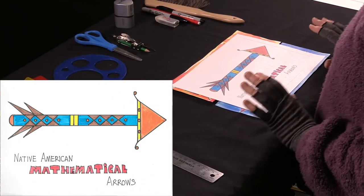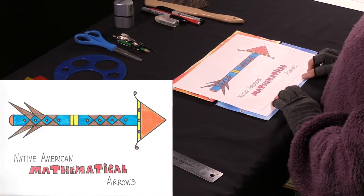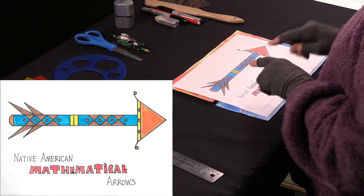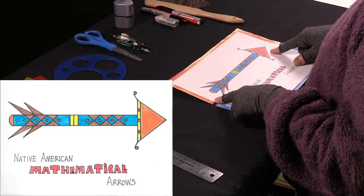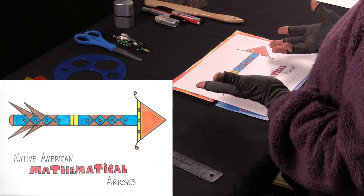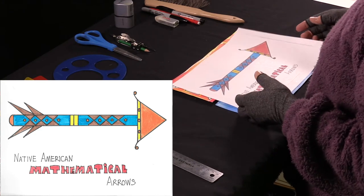This lesson is called Native American Mathematical Arrows. You can see right here this arrow that I drew, and this is kind of what we're going to do, but you're going to do it your way, of course.